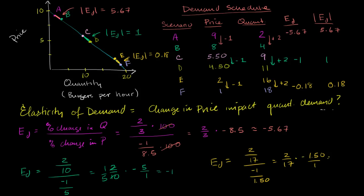What I want to do in this video is focus a bit more on the results of the last video and make sure they make intuitive and mathematical sense to us. Something slightly strange happened: we had a linear demand curve, and for any given change in price — whether we went from A to B, C to D, or E to F — we had a $1 drop in price and a two-unit increase in quantity demanded. This is a linear demand curve.